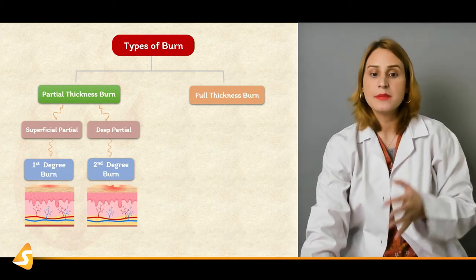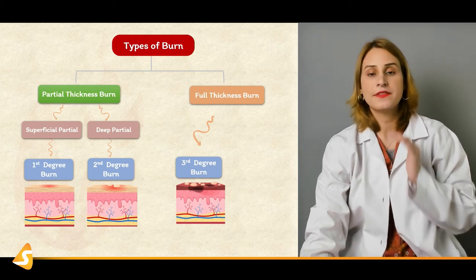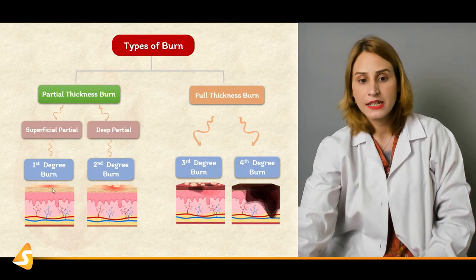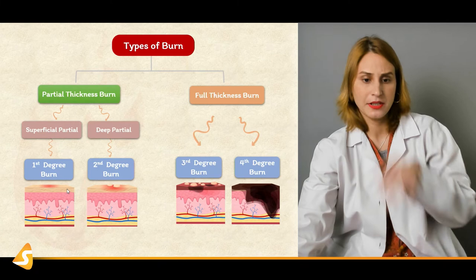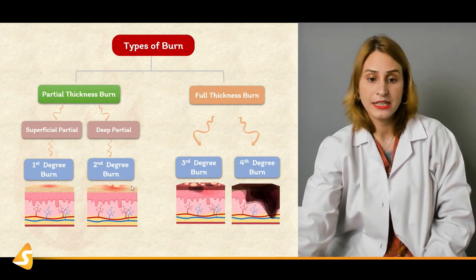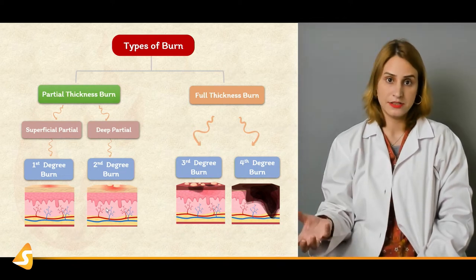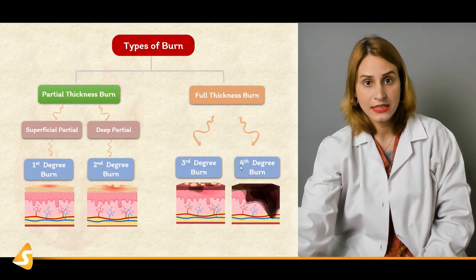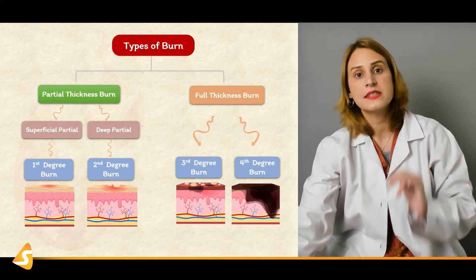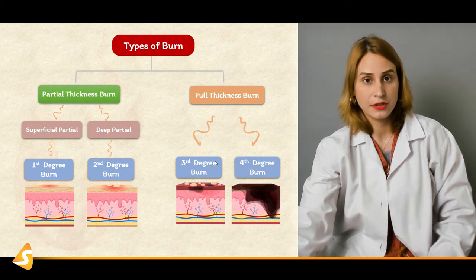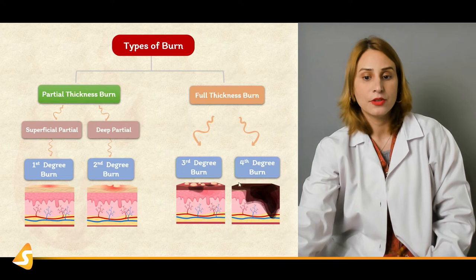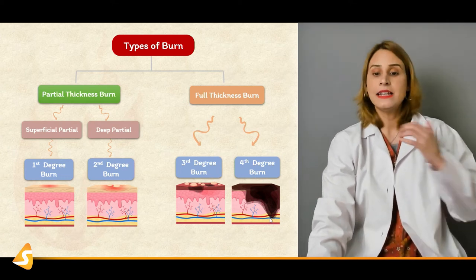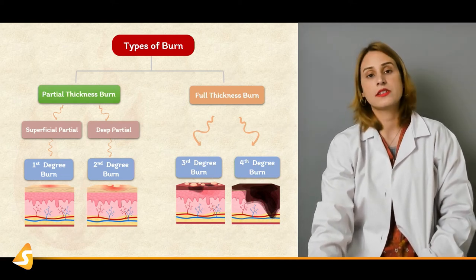Superficial burn is first degree — epidermis only. In superficial partial thickness, the upper one-third of the dermis is involved — epidermis plus papillary layer. In deep partial, it's epidermis and all the dermis including reticular dermis and papillary dermis. In full thickness, it is epidermis, dermis, subcutaneous tissue, and it may involve bones, tendons, and muscles. Third degree burn involves the whole epidermis and both layers of dermis — papillary and reticular. A full thickness or fourth degree burn would involve the hypodermis, vascular component, tendons, muscles, and may reach till the bone.